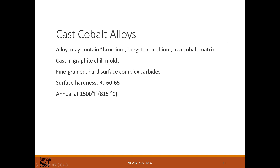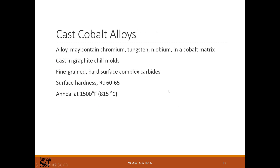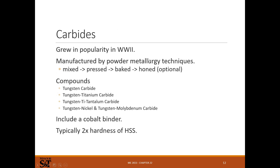You hear about cobalt tooling — cobalt alloys have more cobalt than a standard high speed steel would have. These get a little bit harder, Rockwell C60 to 65, and have higher temperature resistance. Cobalt tooling is a little more expensive — it's essentially like an upgraded high speed steel.